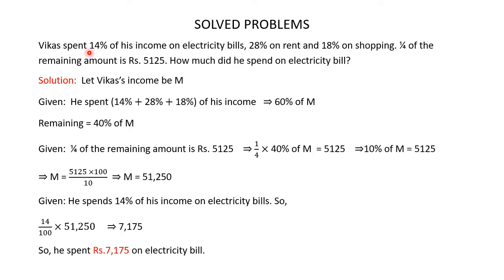Vika spent 14% of his income on electricity bills, 28% on rent and 18% on shopping. One fourth of the remaining amount is Rs.5,125. How much did he spend on the electricity bill? To find his electricity bill spending, we first need to find Vika's income. Let Vika's income be M. He spent 14% + 28% + 18% = 60% of his income.